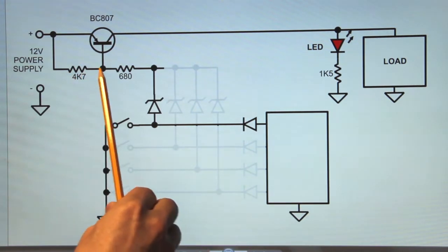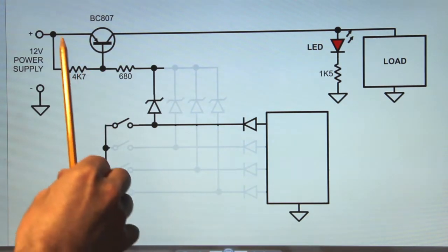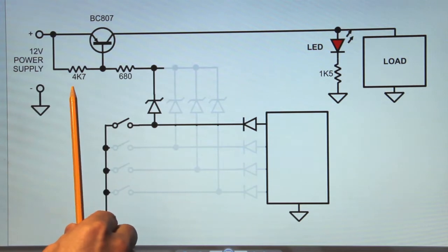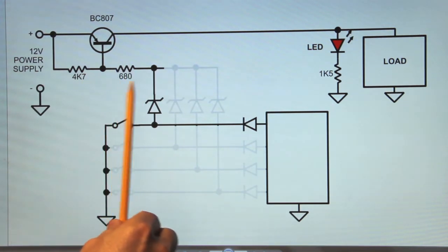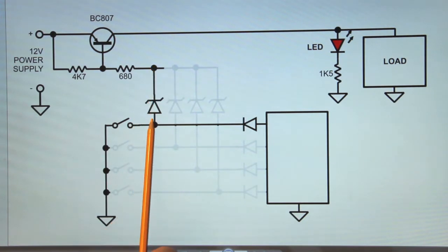Since the base of the transistor should be at a positive battery voltage through the 4k7 resistor, because no current would flow through the 680 ohm resistor and the connected zener diodes, because the push buttons are open and these diodes stop the current from flowing toward ground through the remaining part of the circuit, the transistor should stay in a non-conductive condition and the LED should stay off.